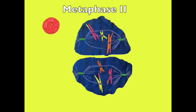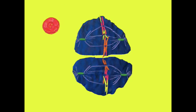In metaphase II, the spindle fibers line the chromosomes up randomly at the equator. The kinetochores of the sister chromatids point towards opposite poles.